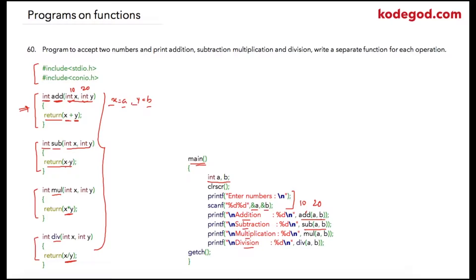Similarly, the program will print subtraction by calling the sub function, then in the third line calling the mul function, and finally the div function. That is how we have declared and defined these four functions and called them from our main function. In the next lecture we will check a few more programs on functions, where we will see how we can achieve results using the call by reference method.